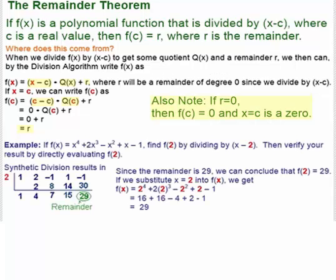And here's an example where we divide f of x equals x to the 4th plus 2x cubed minus x squared plus x minus 1 by x minus 2. And we use that result to find f of 2. And then we're going to verify that this is indeed the correct result.